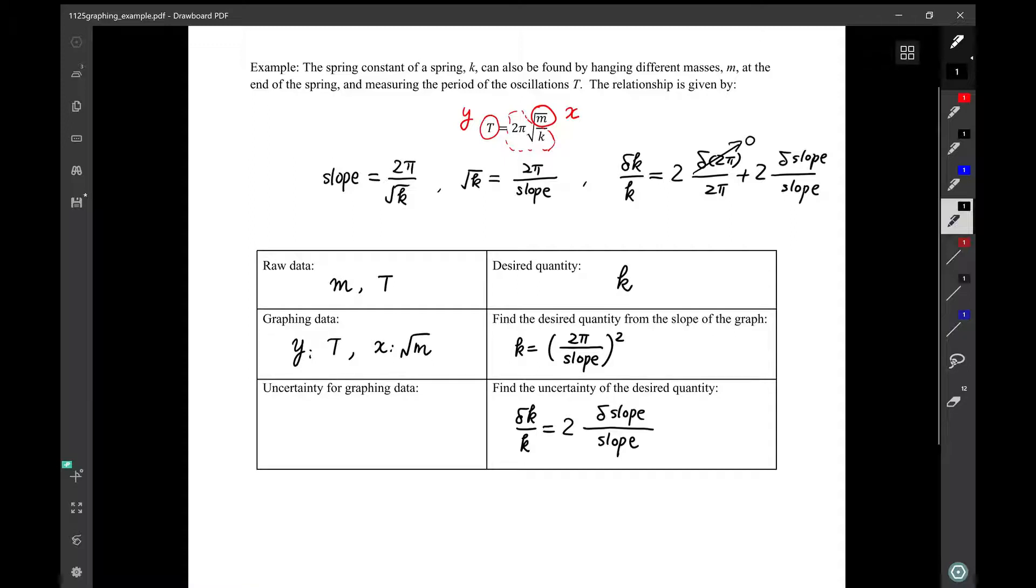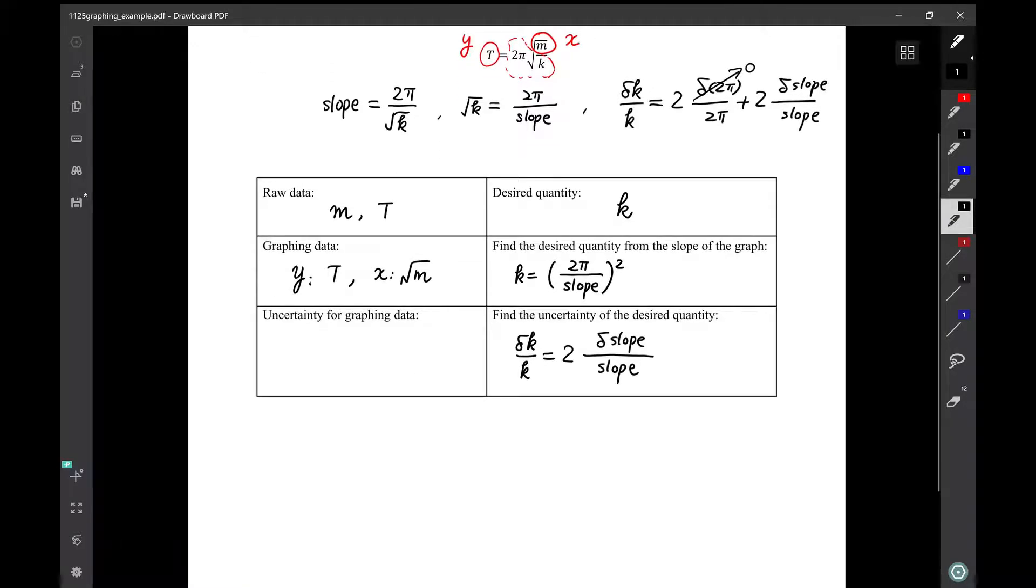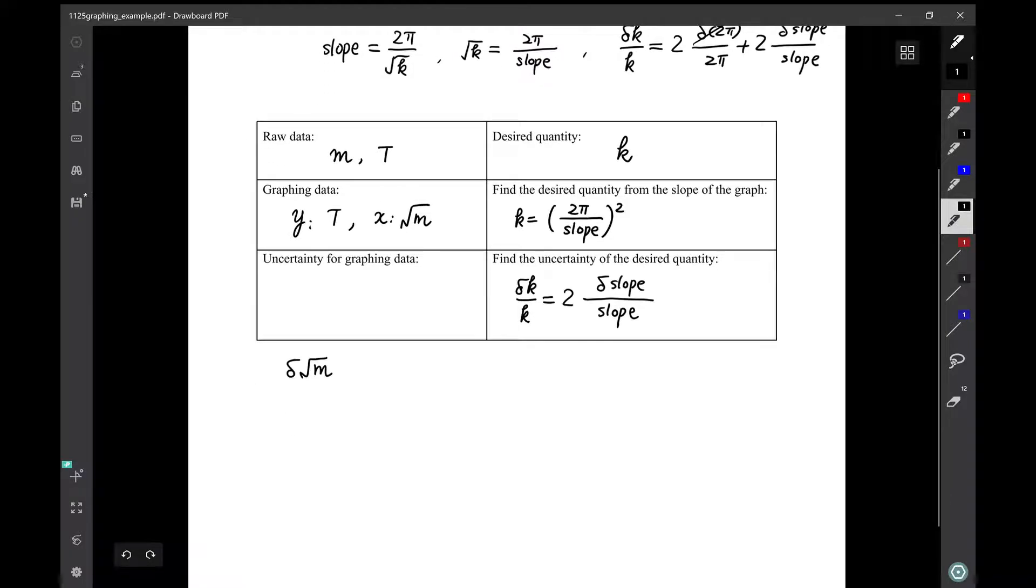There is one question left. That is, when we do the graph, we need to plot the data points, which we can find out by taking our raw data and the square root of the mass to get T and the square root of m. But we also need the uncertainty of this data point in order to plot the error bar. So we still need one more thing: δ√m. We need this number to plot our error bars. There are two ways to find δ√m.